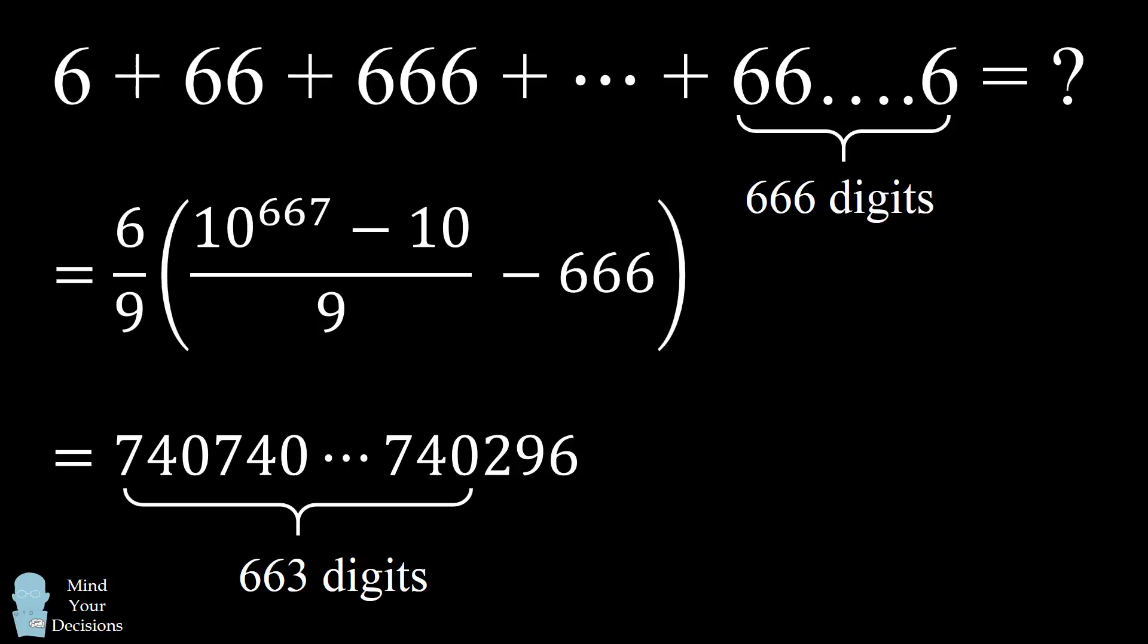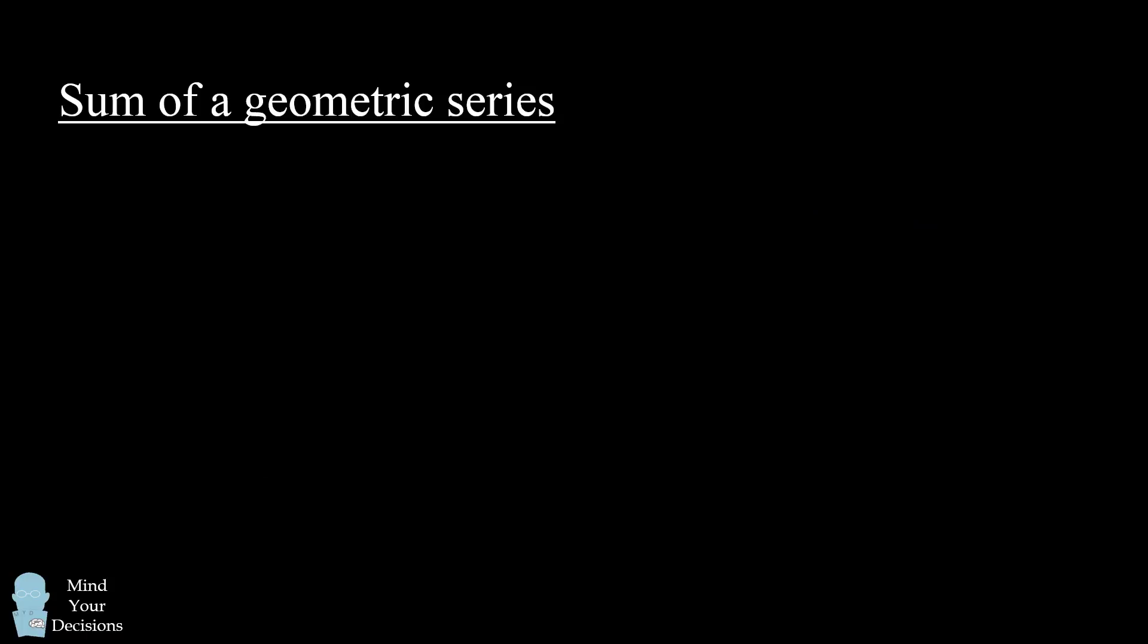So how do we derive these answers? In order to explain the proof, I want to go over a concept that is central to the proofs. This will be the sum of a geometric series.